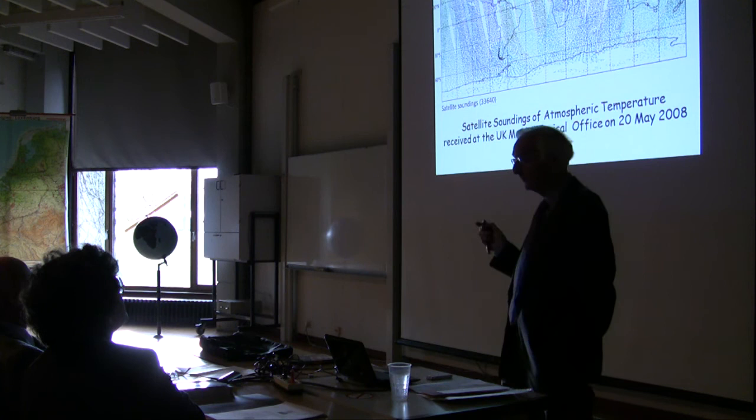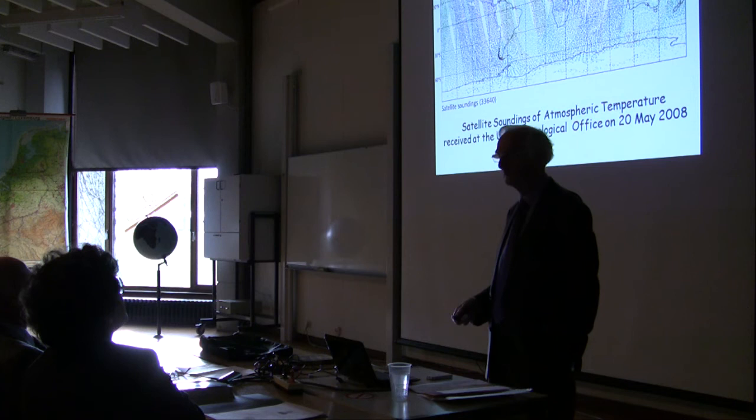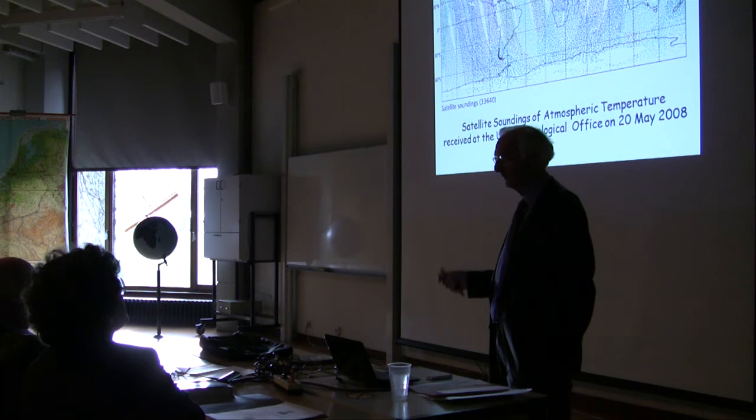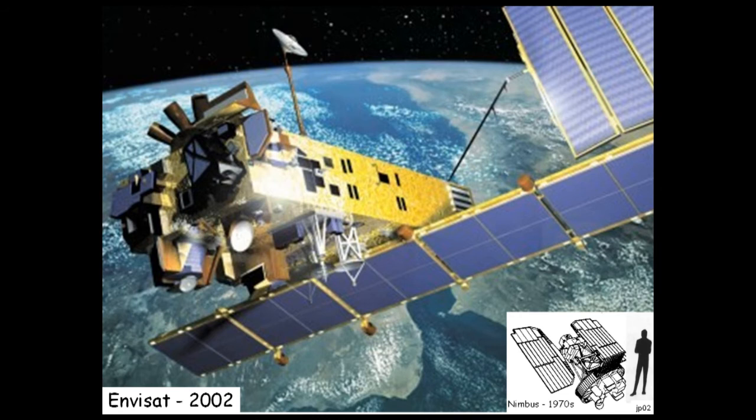This has revolutionised forecasting. We can now put accurate measurements of temperature, water vapour, cloud amount, and all the structure of the atmosphere from space on a global basis continuously — and the whole of meteorology and weather forecasting has changed enormously. Satellites, of course, have continued to develop and grow.